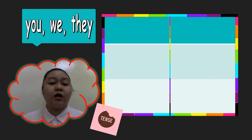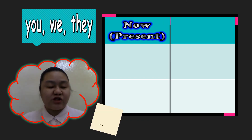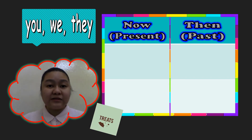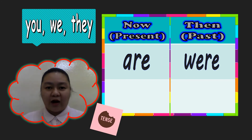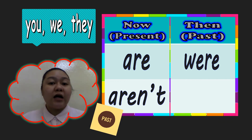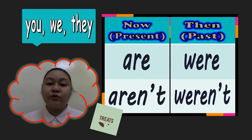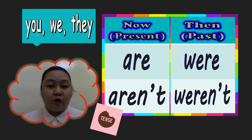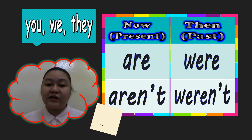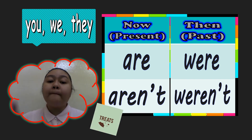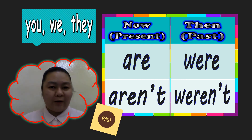If you are using 'you,' 'we,' and 'they,' in the present tense you use 'are,' and in the past tense you use 'were.' If you use 'aren't,' in the past tense you use 'weren't.' Remember, these are used when your pronoun is in plural form, with the exception of 'you.' 'You' can be singular or plural, but you will still use 'are,' 'were,' 'aren't,' and 'weren't.'